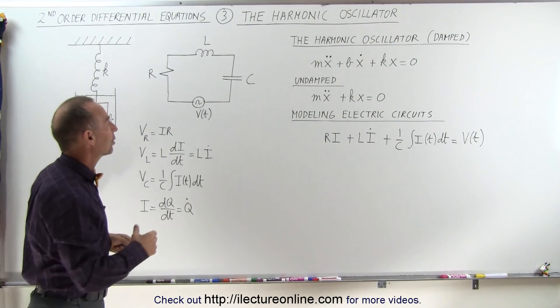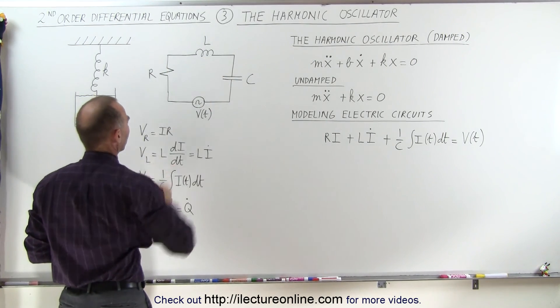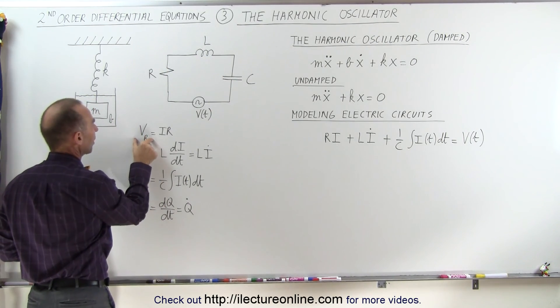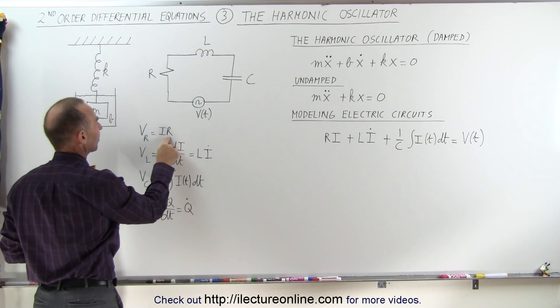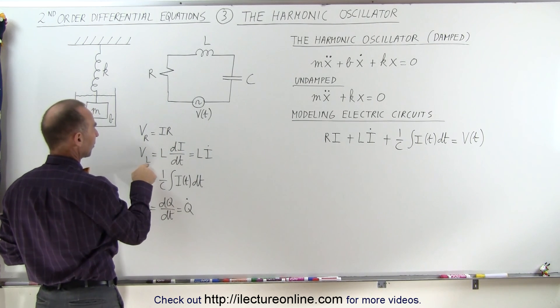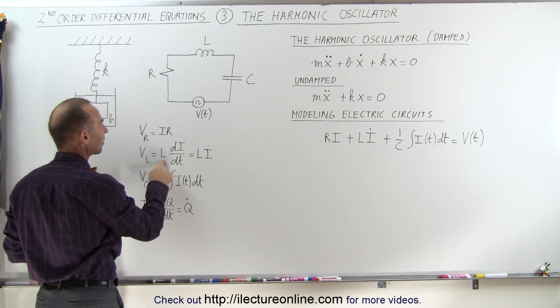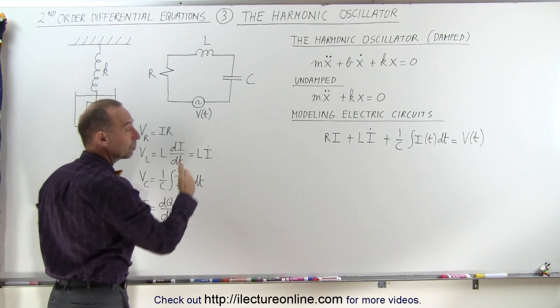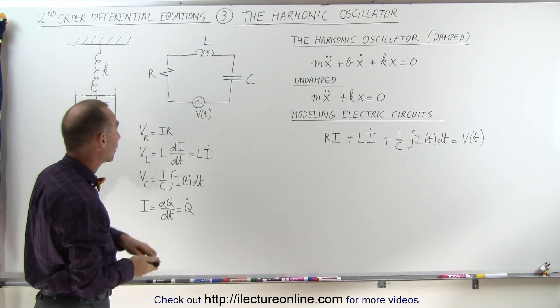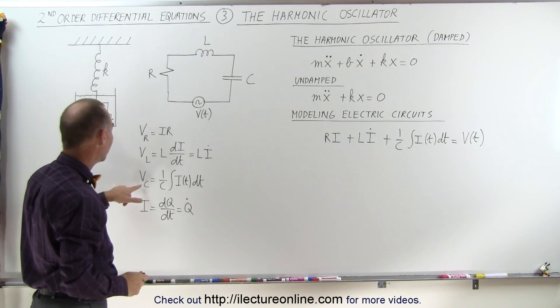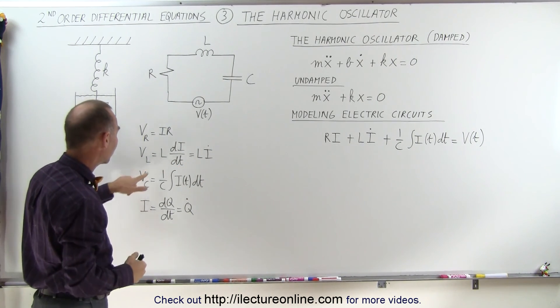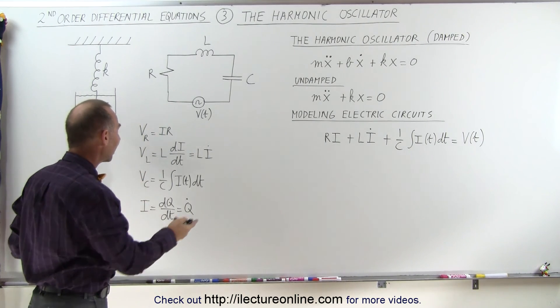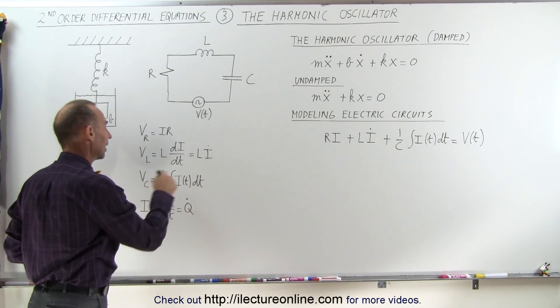We have a similar thing that we can use for RCL circuits. Notice that the voltage across the resistor is the current times the resistance. The voltage across the inductor is the inductance times the derivative with respect to time of the current, which is L times I dot. I dot means the derivative of the current with respect to time. And the voltage across the capacitor is one over the capacitance times the integral of the current times dt.